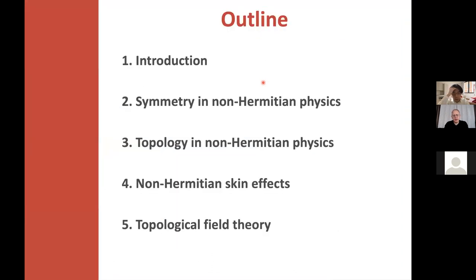Here is an outline of this talk. We begin with discussions about symmetry and topology in non-Hermitian physics. Then, on the basis of this general theoretical framework, we describe and predict new non-Hermitian topological phenomena. As a prime example, we discuss the non-Hermitian skin effect in terms of non-Hermitian topology. Finally, we develop a topological theory of non-Hermitian systems.